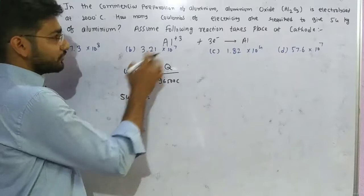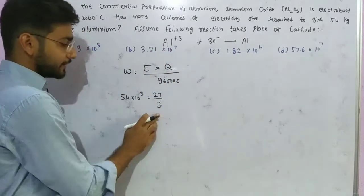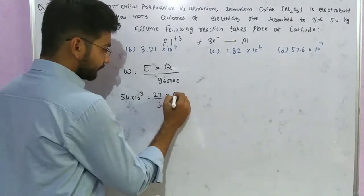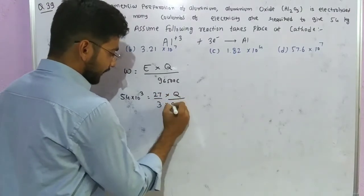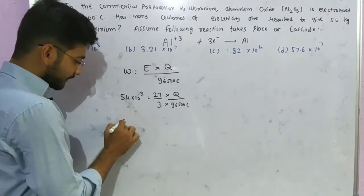The equivalent mass equals molecular mass divided by n-factor. Aluminum has a charge of 3+, so its n-factor is 3. This gives us Q divided by 96,500 coulombs.